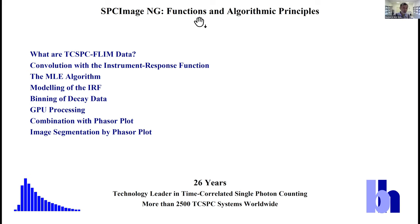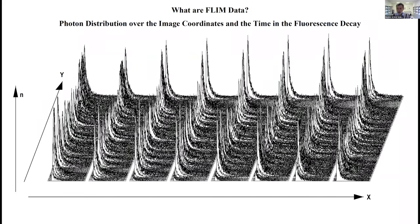So what are FLIM data? First point. I believe you have never seen something like this presentation of raw data of FLIM. What you see here is a photon distribution. FLIM data are photon distributions over the image coordinates x and y, and in every pixel you have a fluorescence decay curve in a large number of time channels.